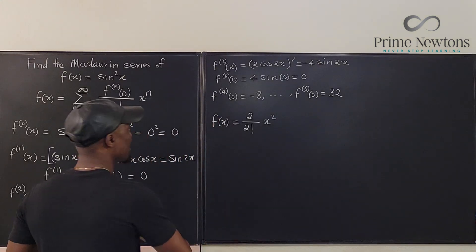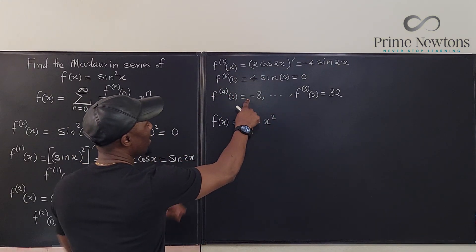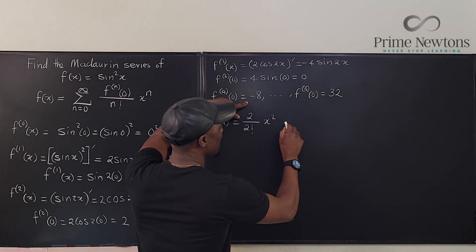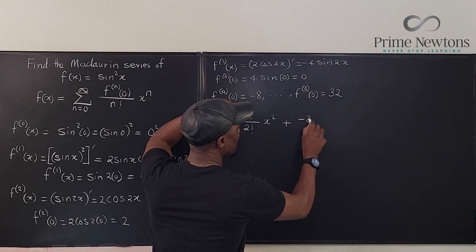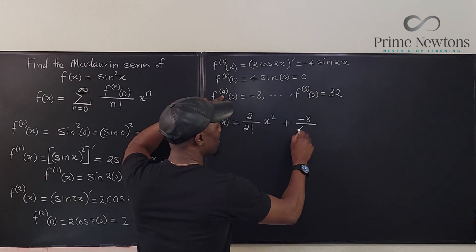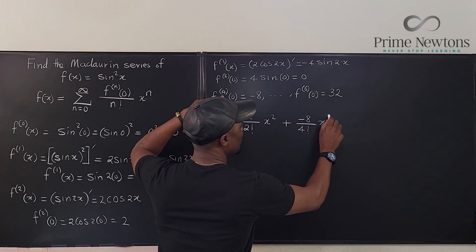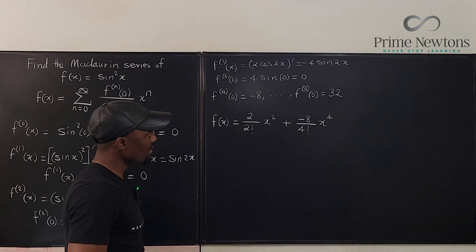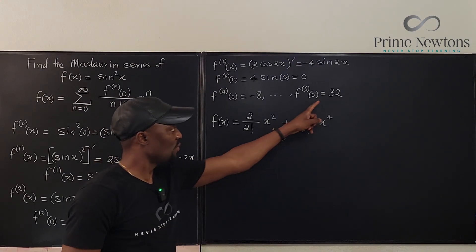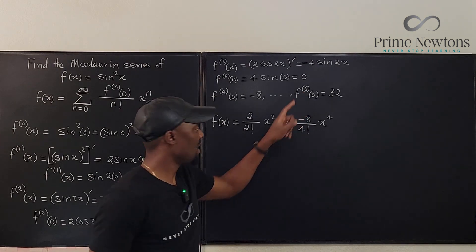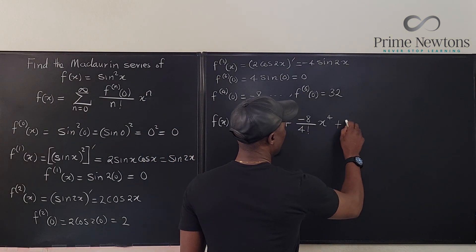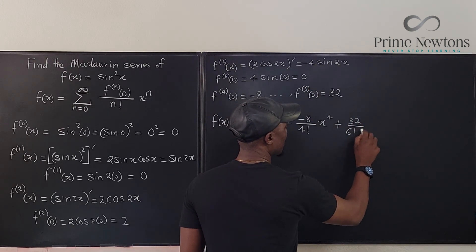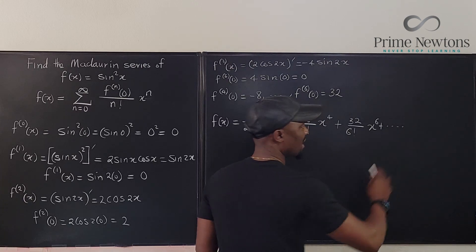The next non-zero term occurs at n equals 4, giving minus 8 over 4 factorial times x to the 4th. Then the next non-zero term is at n equals 6, giving positive 32 over 6 factorial times x to the 6th. We just keep going like that forever.